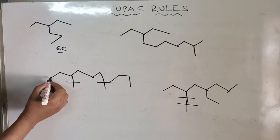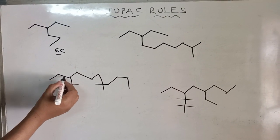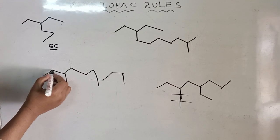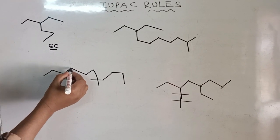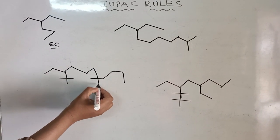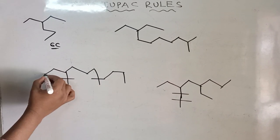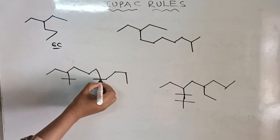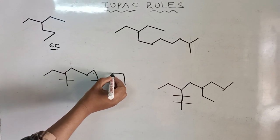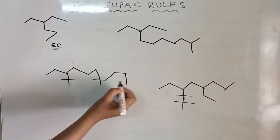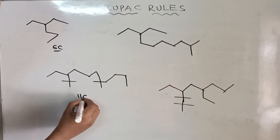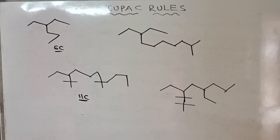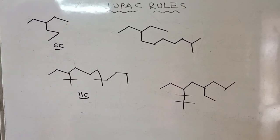In this example, one path gives 1, 2, 3, 4, 5 and another gives 1, 2, 3, 4, 5, 6, 7, 8. The longest continuous path counts 1, 2, 3, 4, 5, 6, 7, 8, 9, 10, 11. The system has 11 carbons as the maximum number of carbons in the continuous manner.